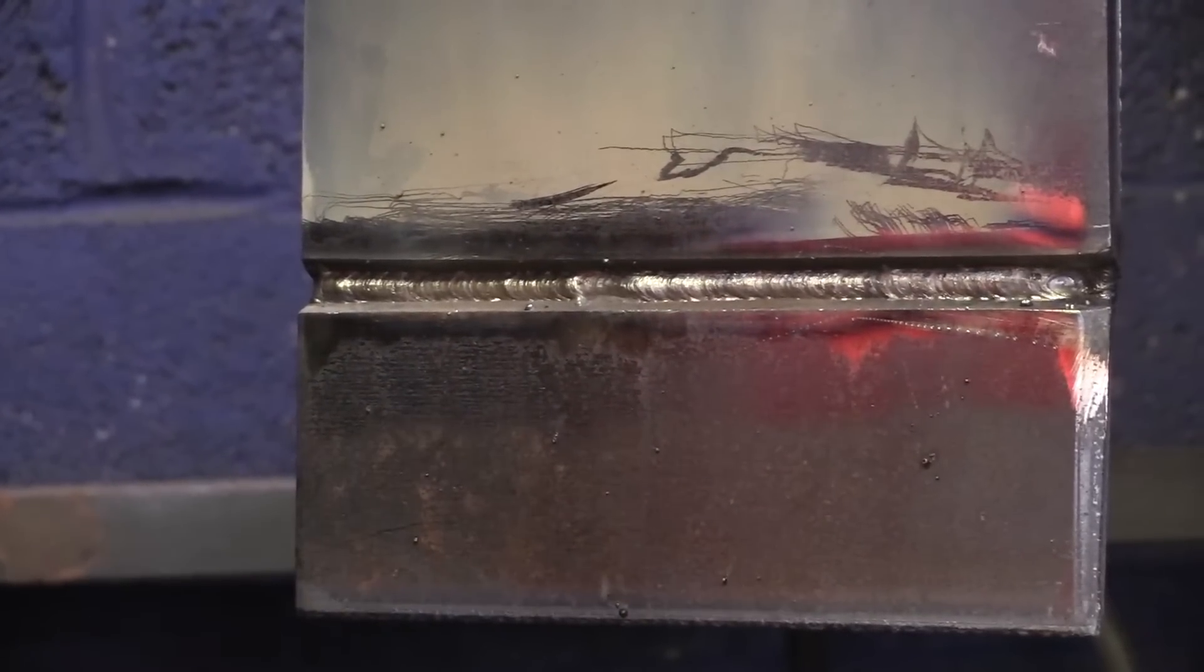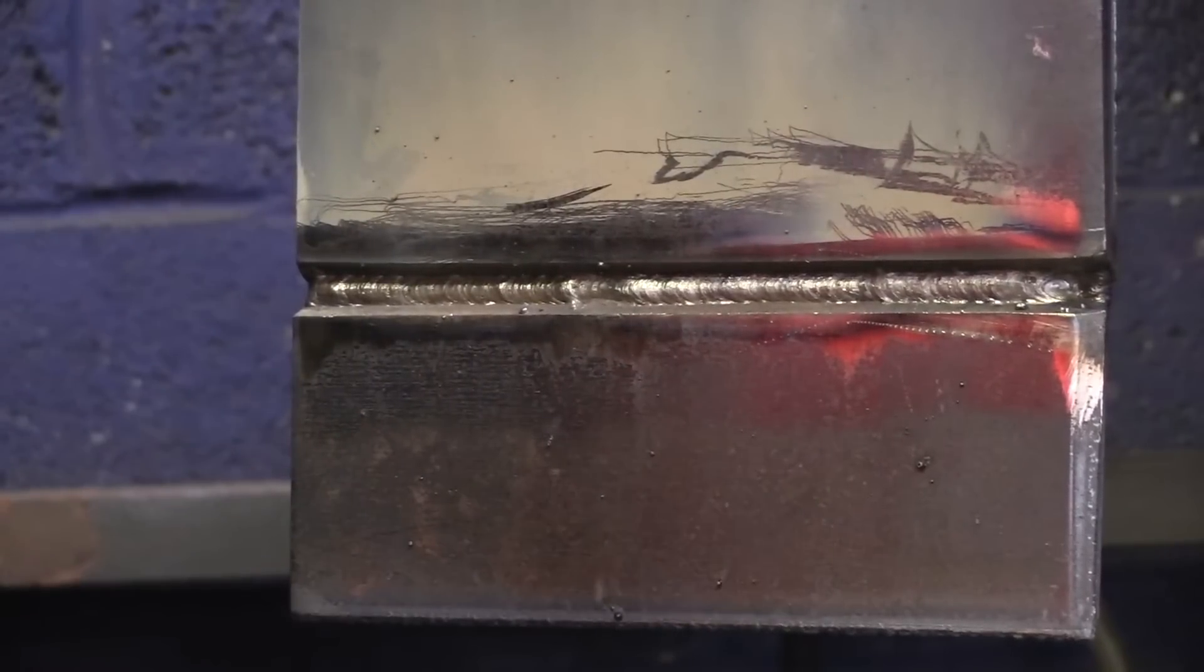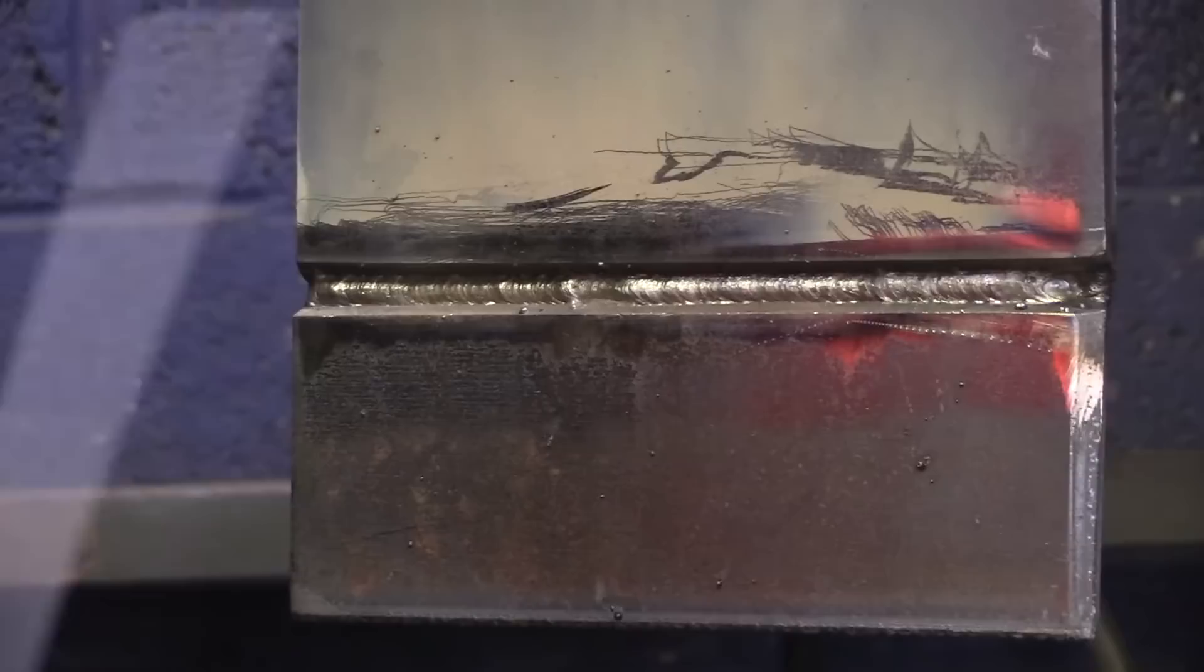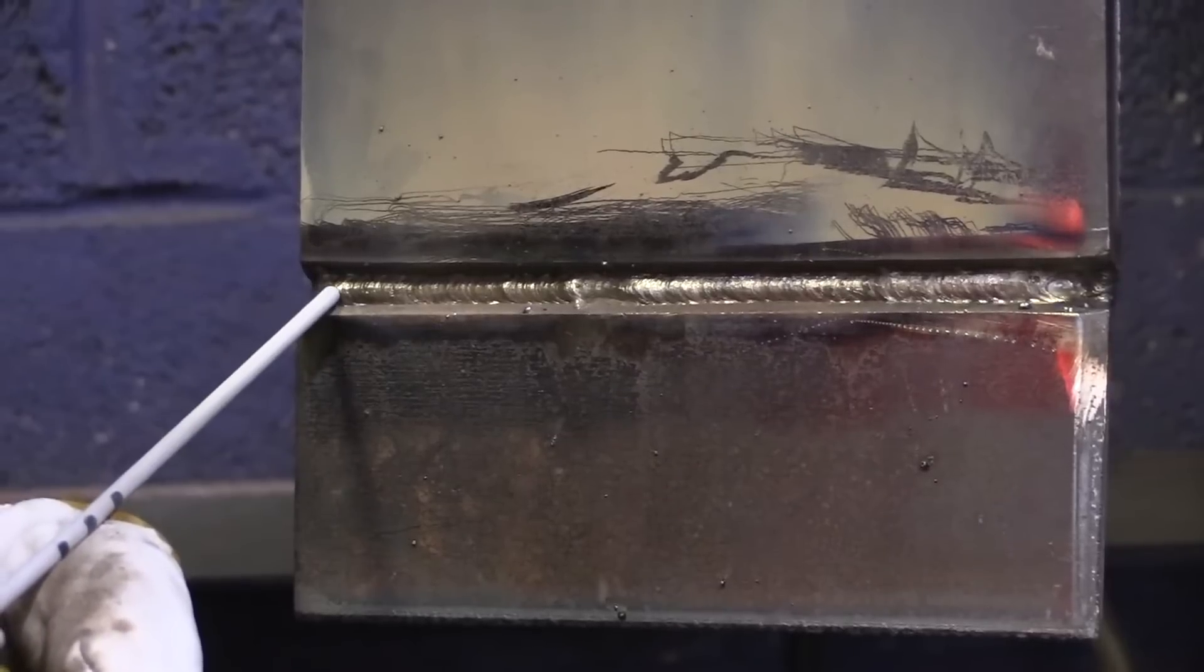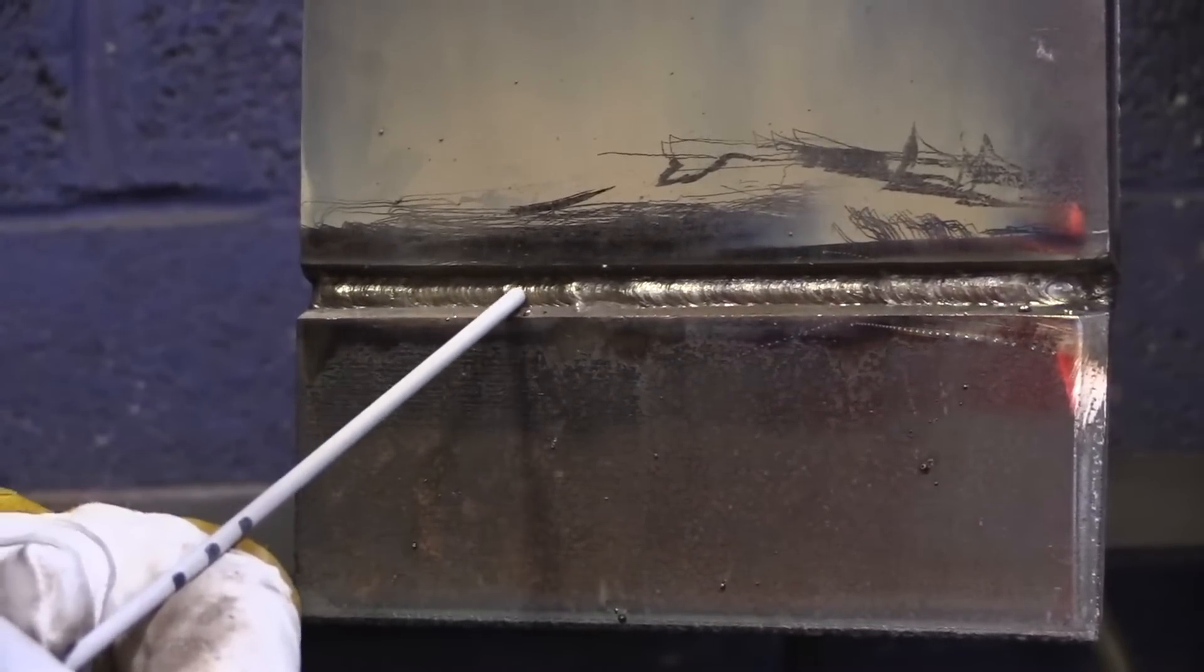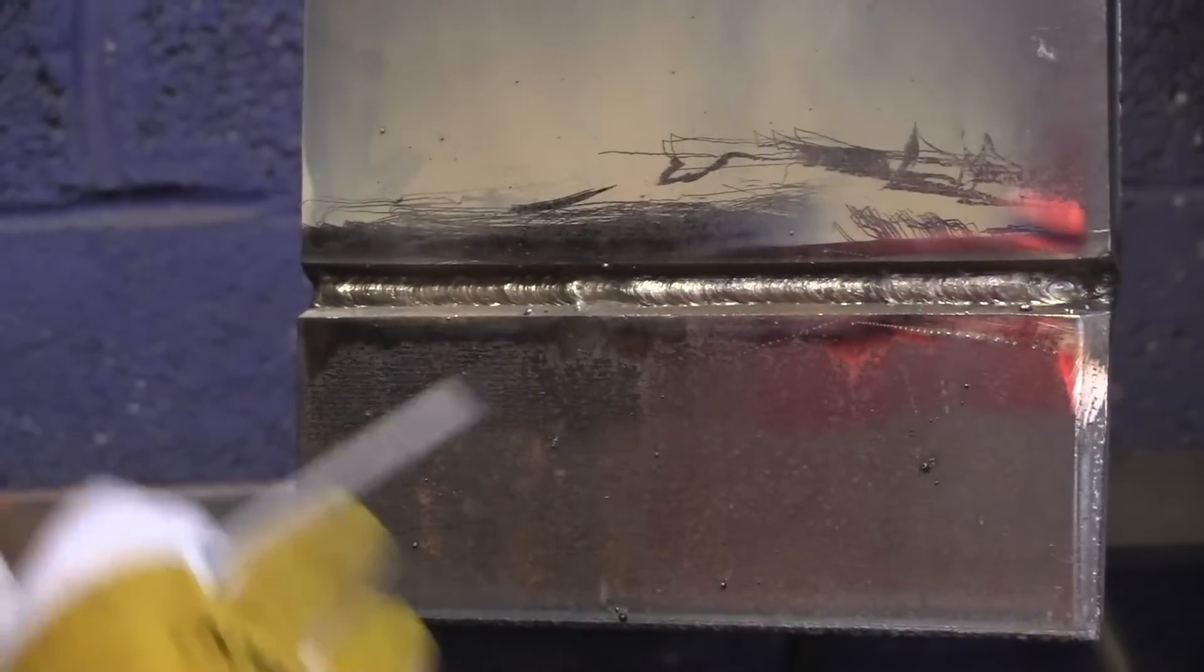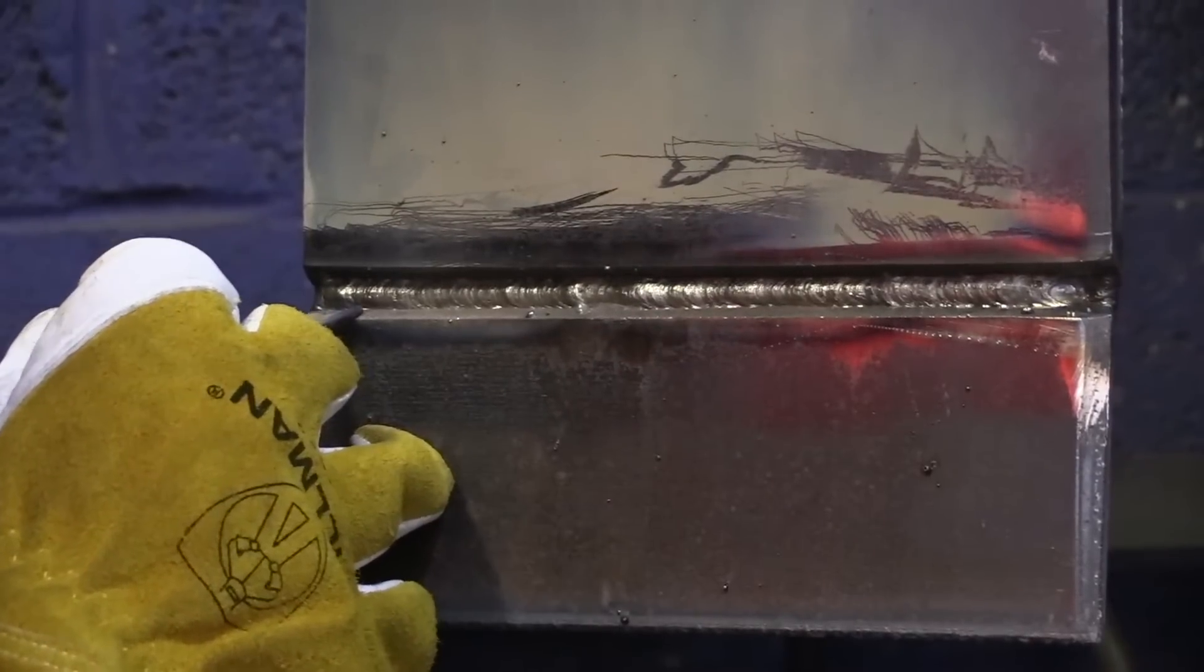All right. So now that we finished our hot pass, we're going to go ahead and start filling this thing up with a series of layers of stringers. So for our first pass here on our second layer, we're going to be aiming kind of at the toe, the bottom toe of our hot pass. And our goal here is to partially cover up our hot pass. And we also want to partially work our way down onto this bottom bevel.